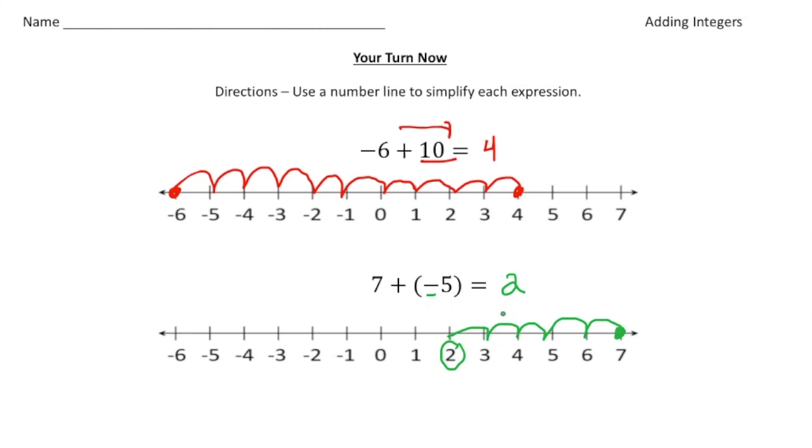So again, just one more time. Anytime you add a positive, you move that many spots to the right. Anytime you add a negative, you move that many spots to the left. How'd you do?